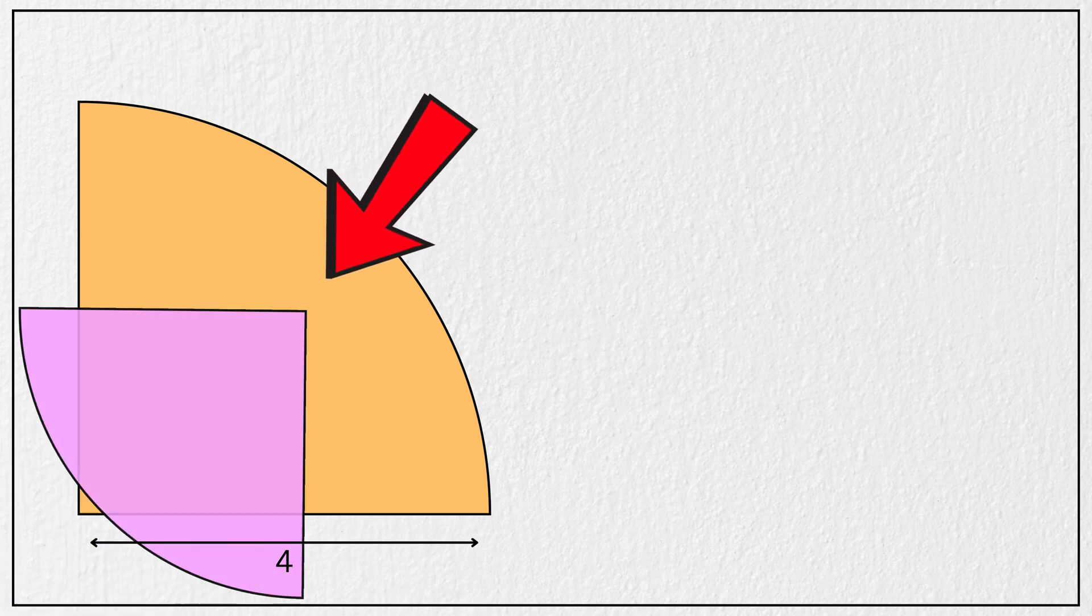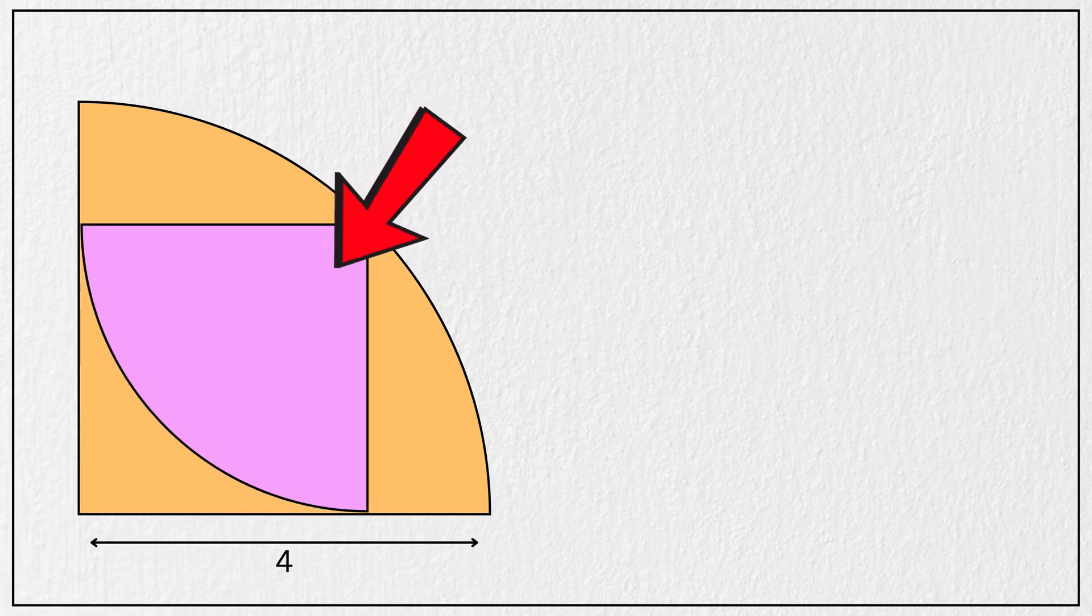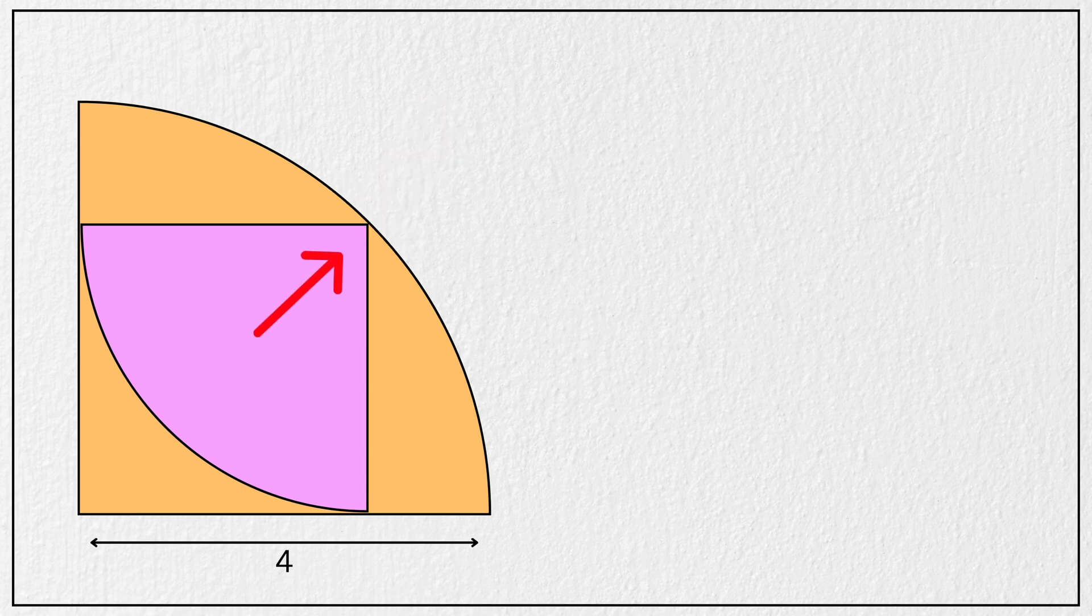Inside this quarter circle, a pink quarter circle is placed in such a way that its center lies on the arc of the orange circle, and its arc is tangent to both the edges of the orange quarter circle like this.